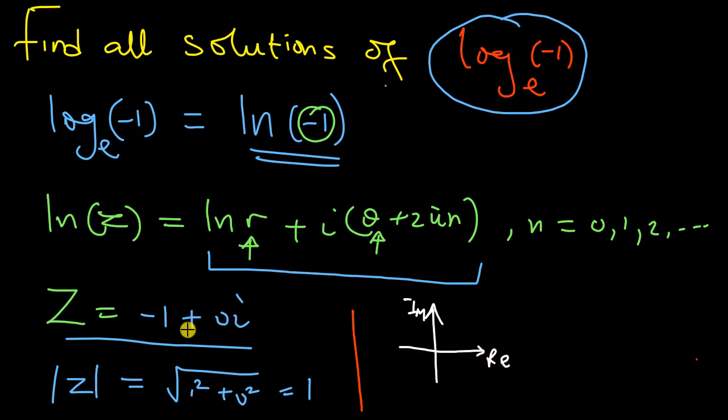This is the real axis, so if I plot this complex number I only have negative 1 on the real axis, 0 units in the y-axis or the imaginary axis. You can see that the argument of this complex number is π. That's 180 degrees.